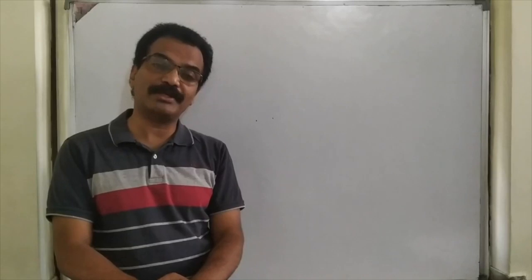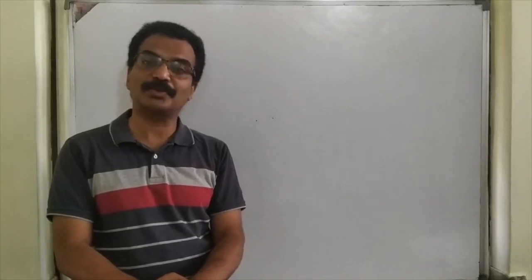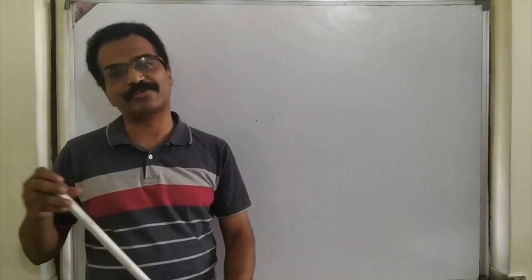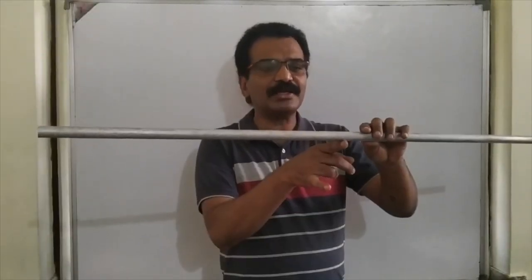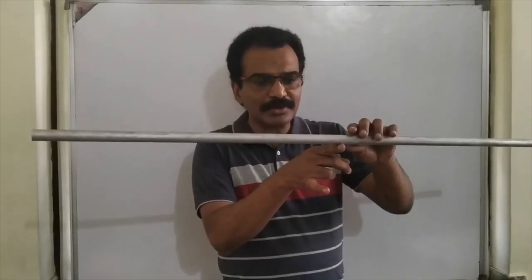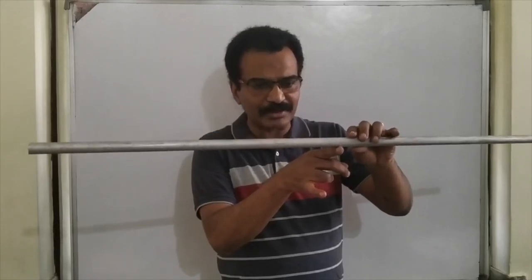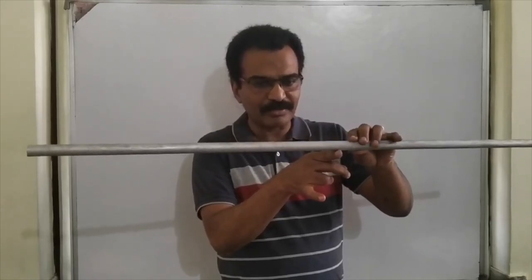Center of gravity of a body is the point through which weight of the body acts. If a body is pivoted vertically below the center of gravity, the body gets balanced.